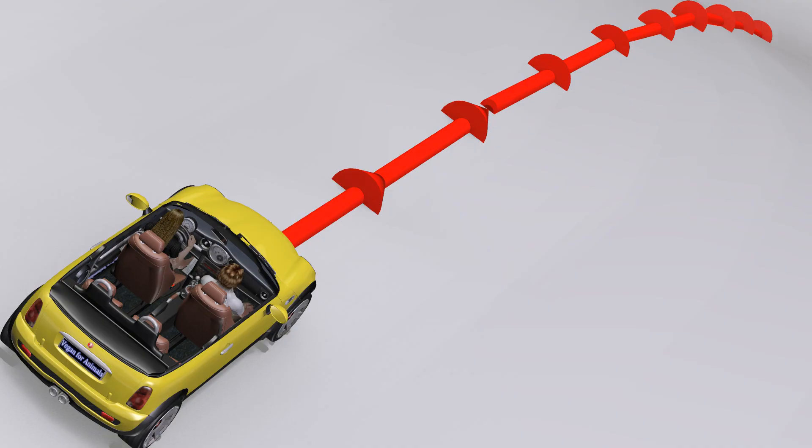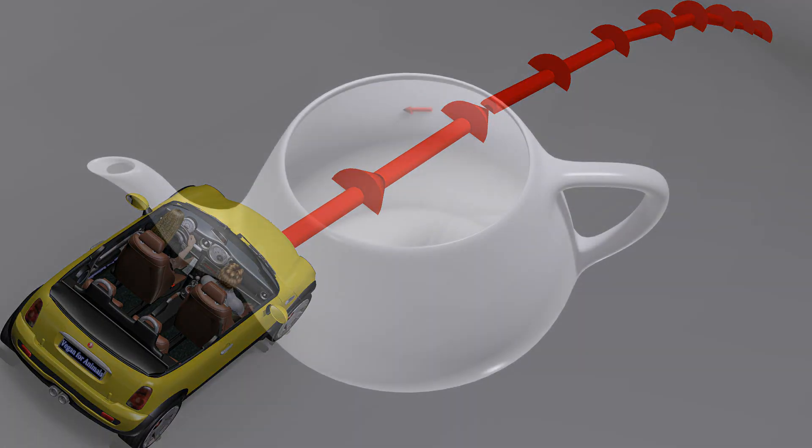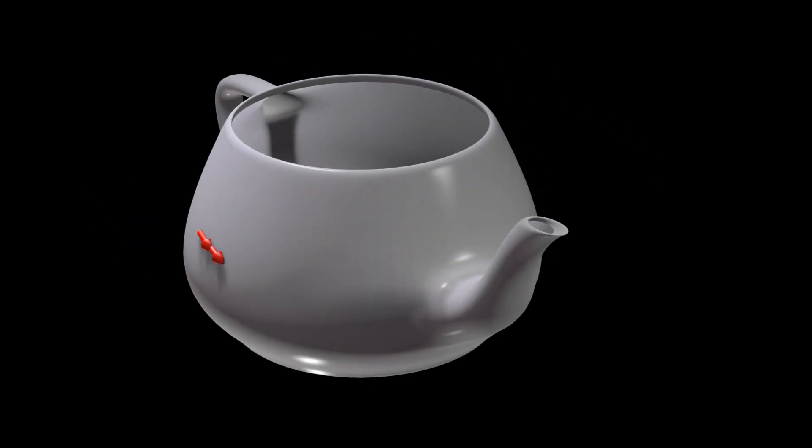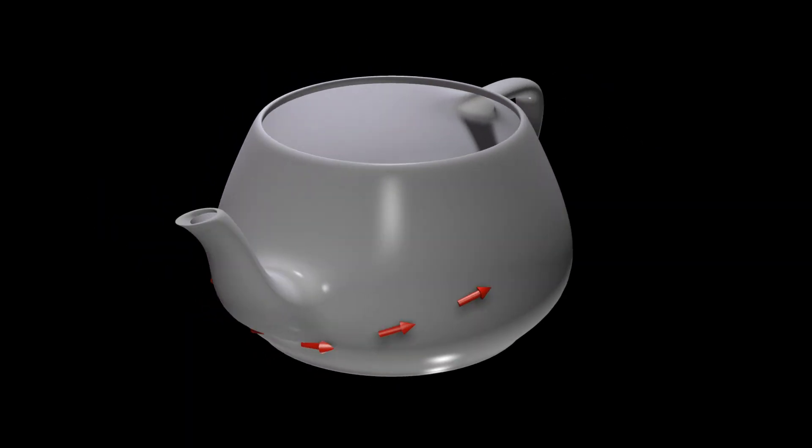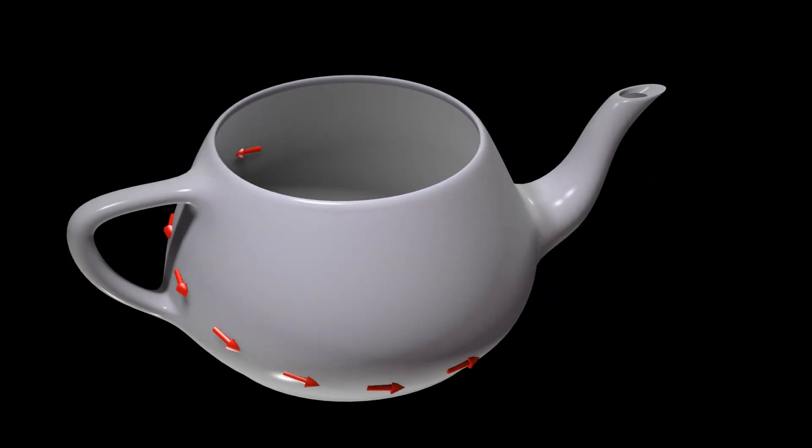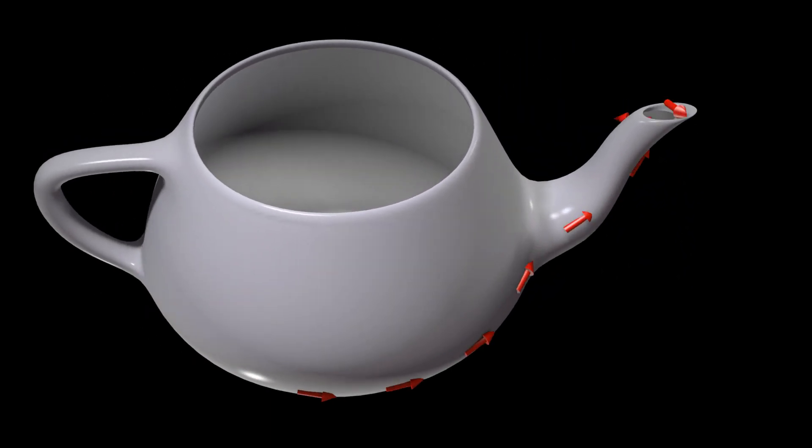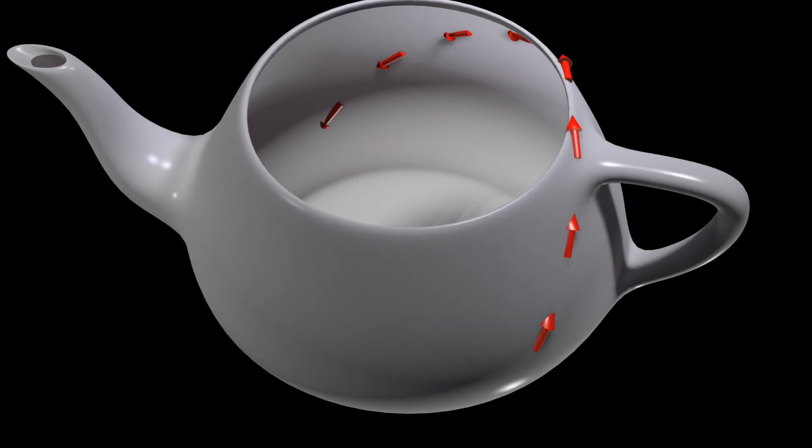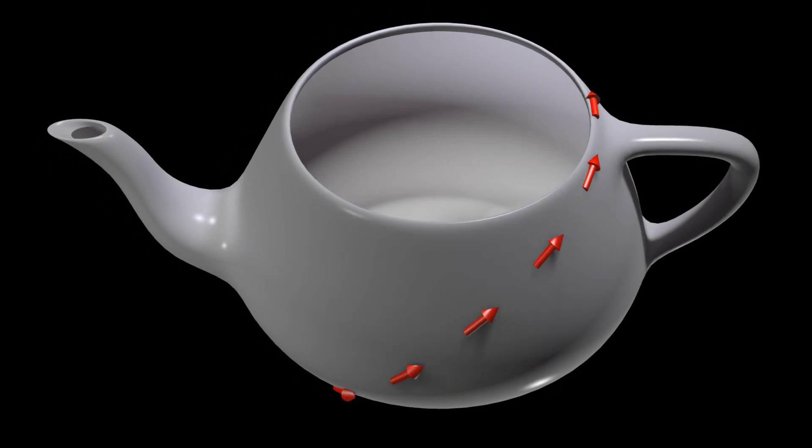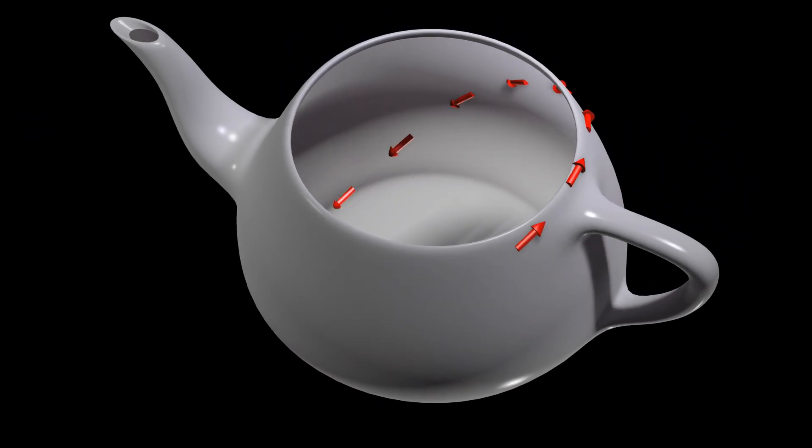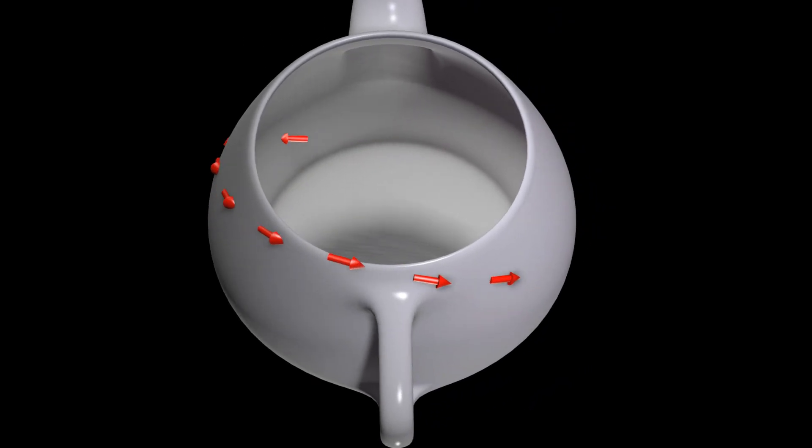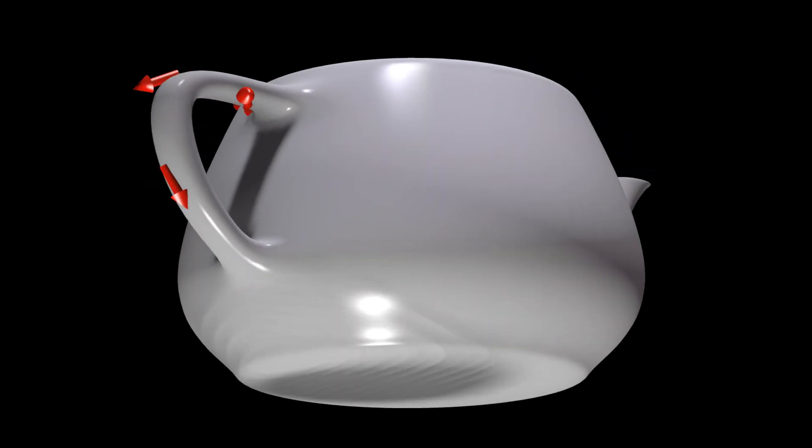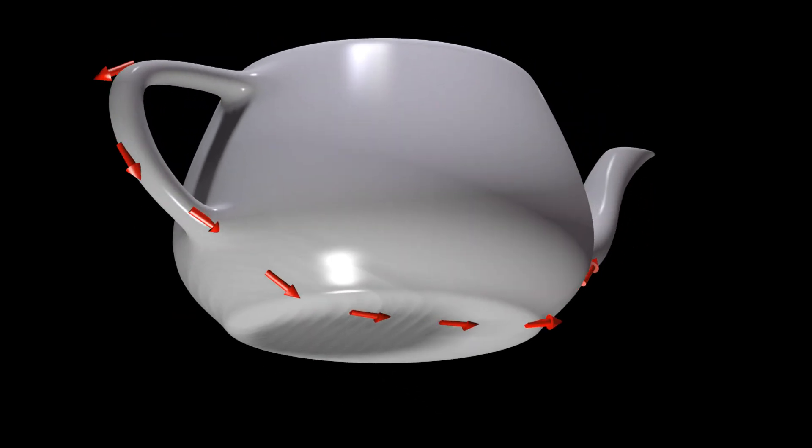One thing that all these examples have in common is that the curved space is represented as a two-dimensional surface embedded in a three-dimensional space that obeys Euclidean geometry. This can be misleading, as the curved, four-dimensional spacetime of our universe does not necessarily need to be embedded in a space of more than four dimensions in order for general relativity to work. It could just be that the universe we live in is simply not governed by Euclidean geometry.